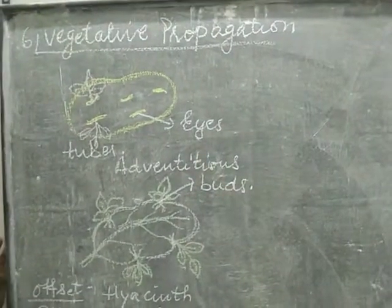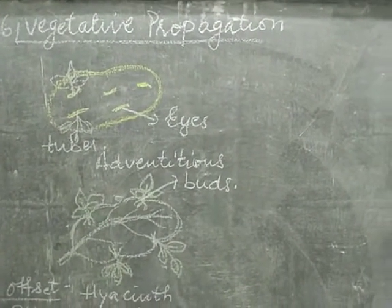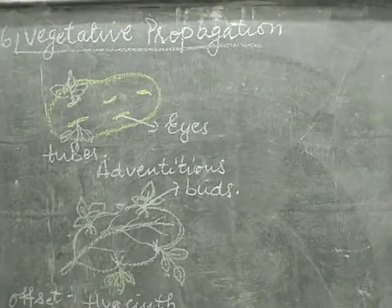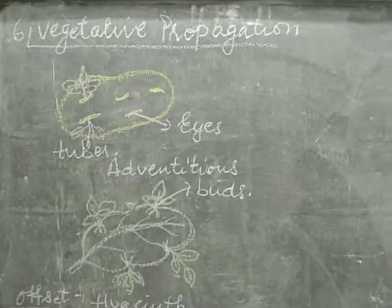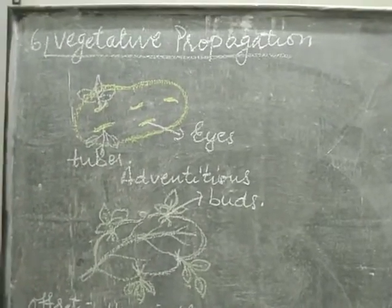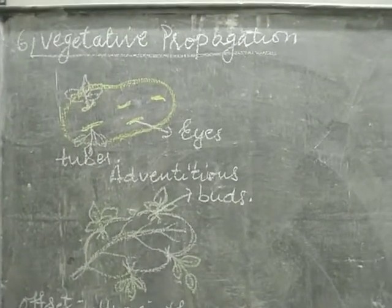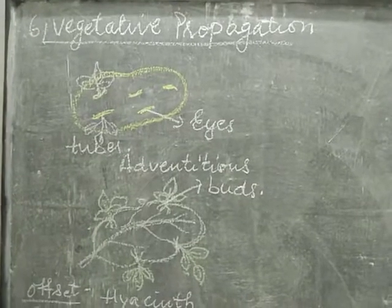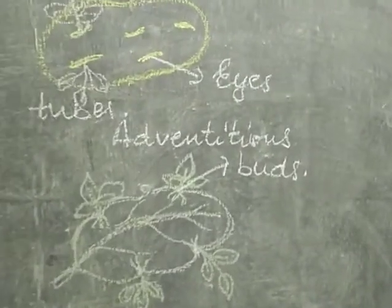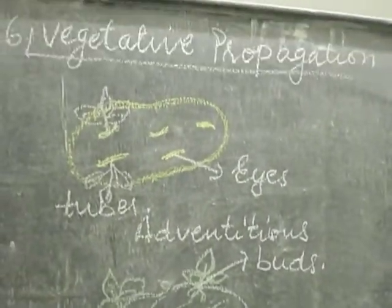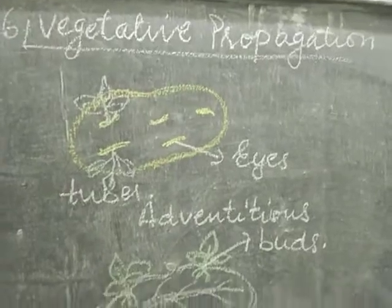Today we have seen various modes of asexual reproduction. We have covered all six modes of asexual reproduction, ending with vegetative propagation.